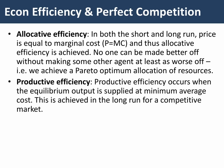What about productive efficiency? Productive efficiency happens when the equilibrium output is supplied at the minimum average cost of production. Yes, that is also achieved in perfect competition. Firms with quite high unit costs might not be able to justify staying in the industry as the forces of competition drive down the market price. So in the long run we're at the lowest point of the average cost curve — perfect competition does lead to productive efficiency.